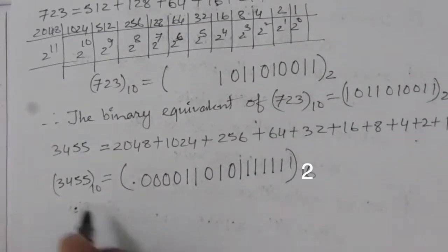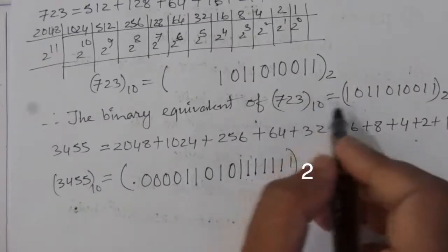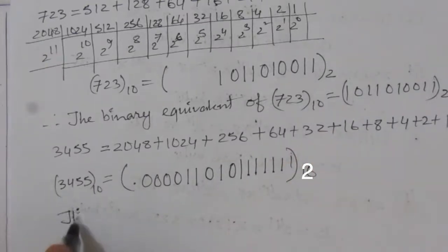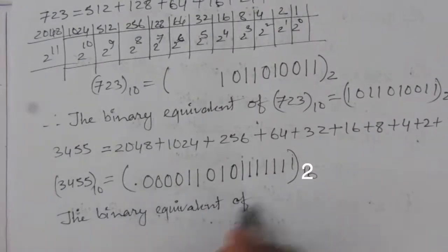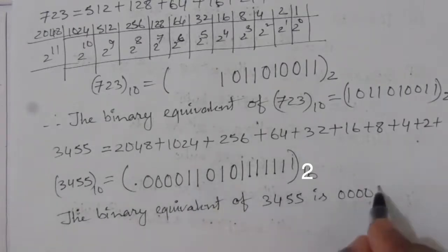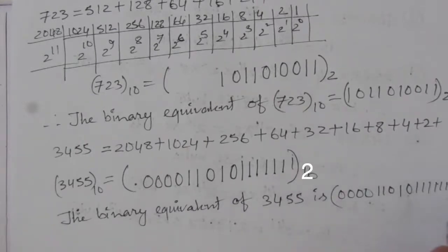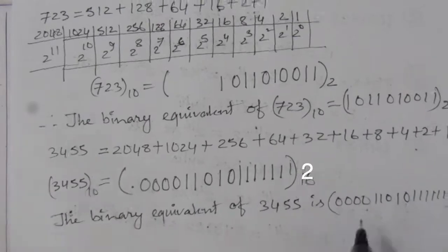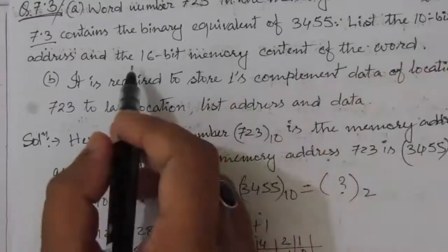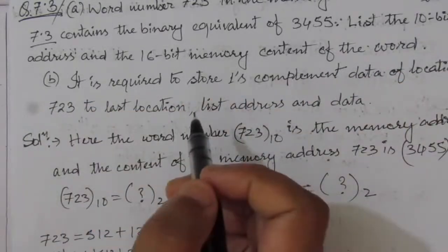So the binary equivalent of 3455 is 0000 1101 0111 1111 — a 16-bit binary number. This is the data contained in memory address 723. We have now obtained both the 10-bit memory address and the 16-bit memory content, completing part A of the problem.